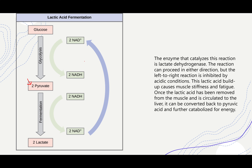The enzyme that catalyzes this reaction is lactate dehydrogenase. It proceeds in either direction, but the reaction producing lactic acid is inhibited by acidic conditions. Lactic acid buildup causes muscle stiffness and fatigue. Once lactic acid has been removed from the muscles and circulated to the liver, it can be converted back to pyruvic acid and further metabolized for energy.